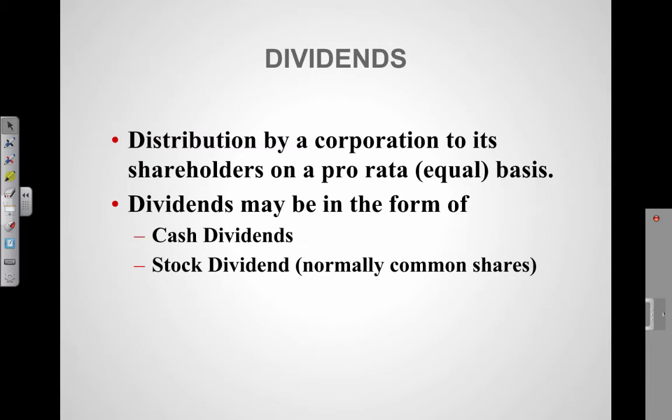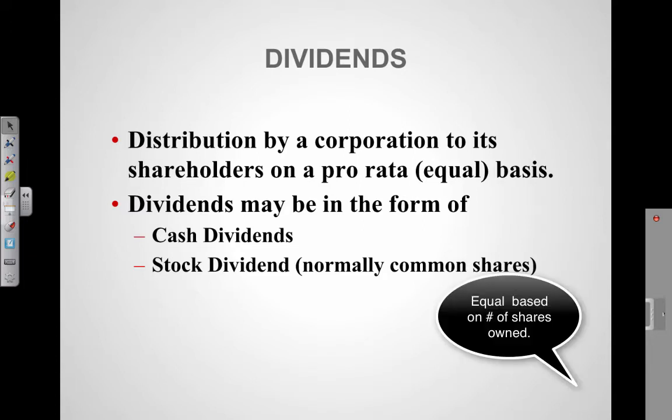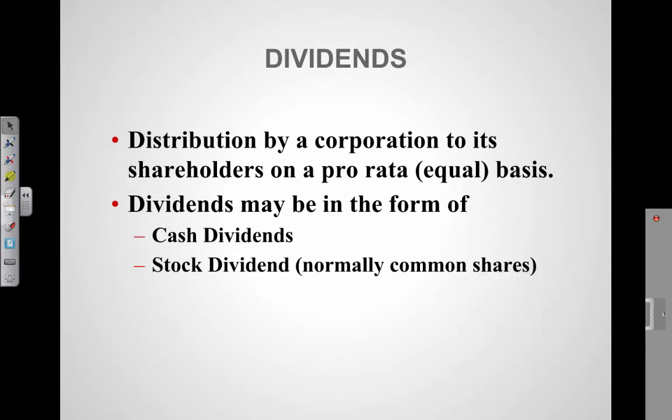We've talked about dividends a little bit in class already, but just to remind you, dividends are what a corporation gives out. It's a distribution by a corporation to its shareholders on an equal basis. So if they give out money as dividends, every shareholder will get an equal portion of that money. Dividends may be in the form of cash or in more shares — normally they are given in common shares.